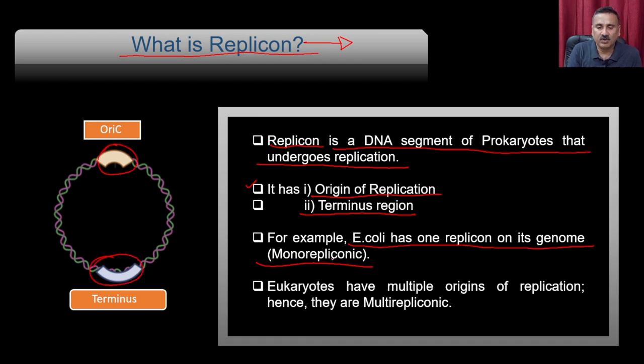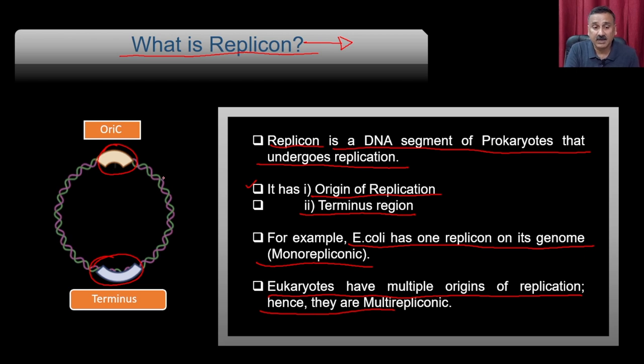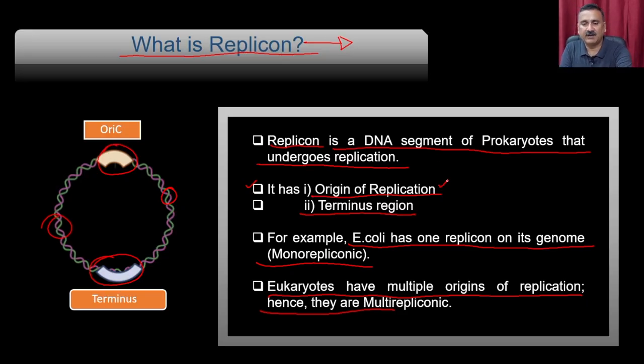E. coli is mono-replicon, starting from one origin, whereas eukaryotes have multiple origins of replication and are therefore multi-replicon. Eukaryotic genomes are larger than prokaryotic genomes, so they cannot afford to replicate with a single origin and complete replication within the required time period — hence they use multiple origins.